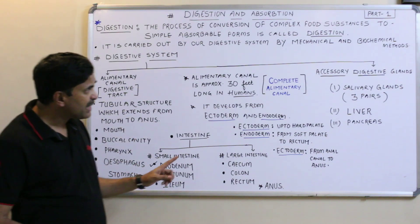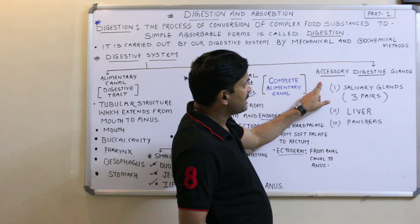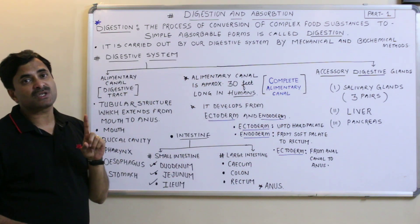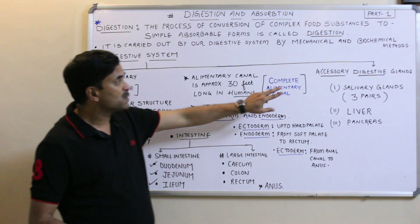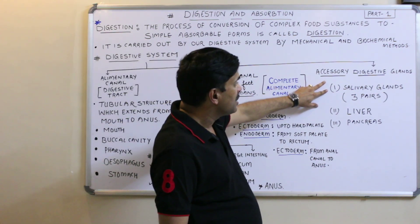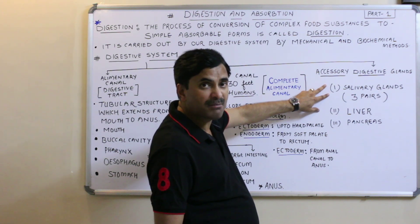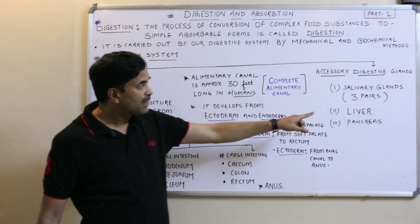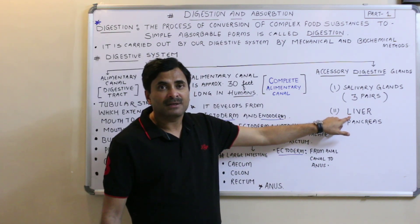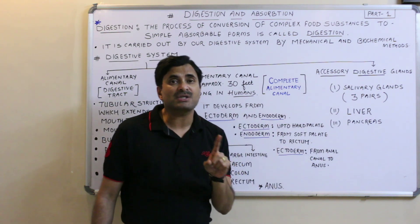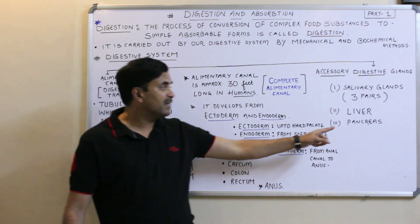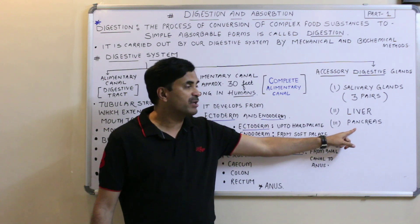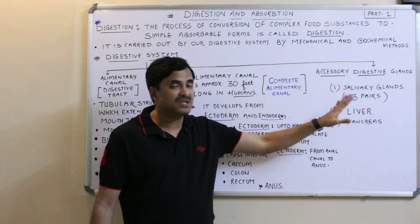We must also study the accessory digestive glands, without which our digestive system remains incomplete. There are three types: first, the salivary glands found in the buccal cavity — in human beings there are three pairs. Second is the liver, the largest gland of the body. Third is the pancreas, the second largest gland of the body, also treated as a mixed gland.